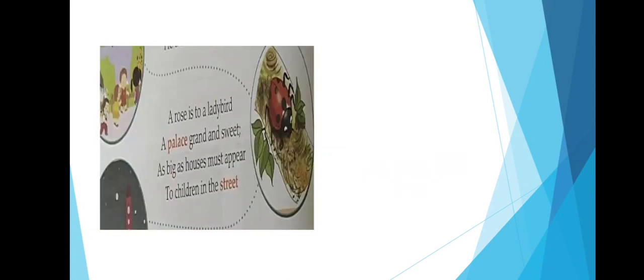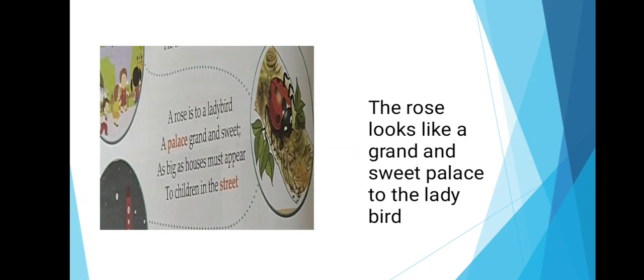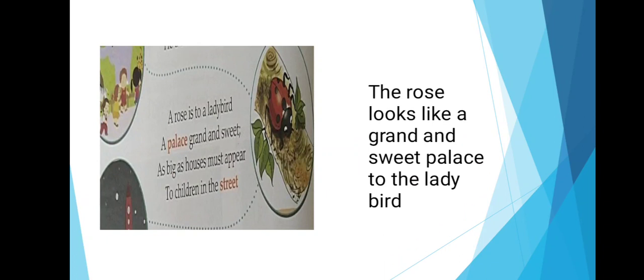A rose is to a lady bird a palace grand and sweet, as big as houses must appear to children in the street. The rose looks like a grand and sweet palace to the lady bird. Lady bird says that I am so tiny, I am so small, that the rose looks like a grand and sweet palace to me. Again, a comparison of bigger and smaller.